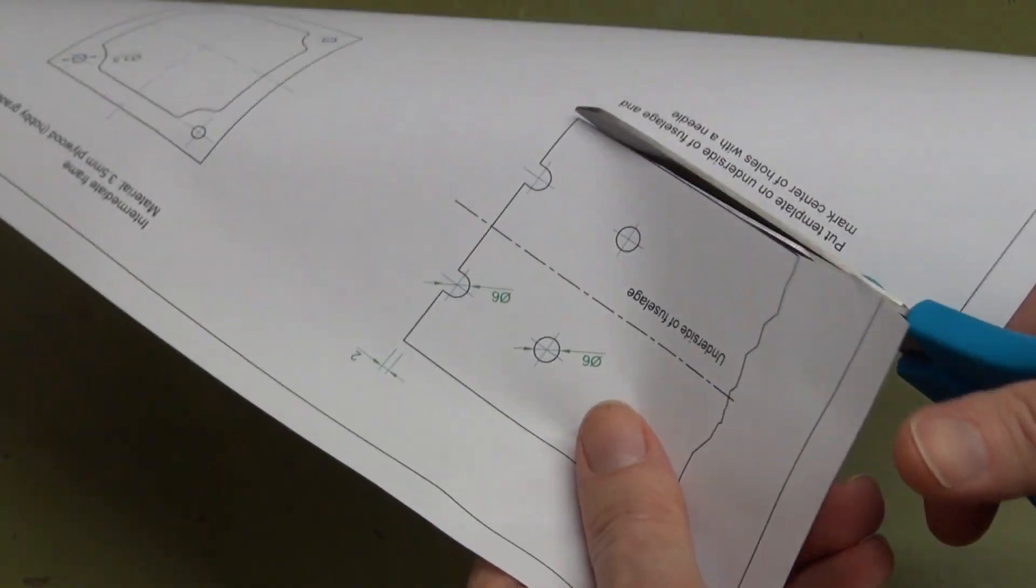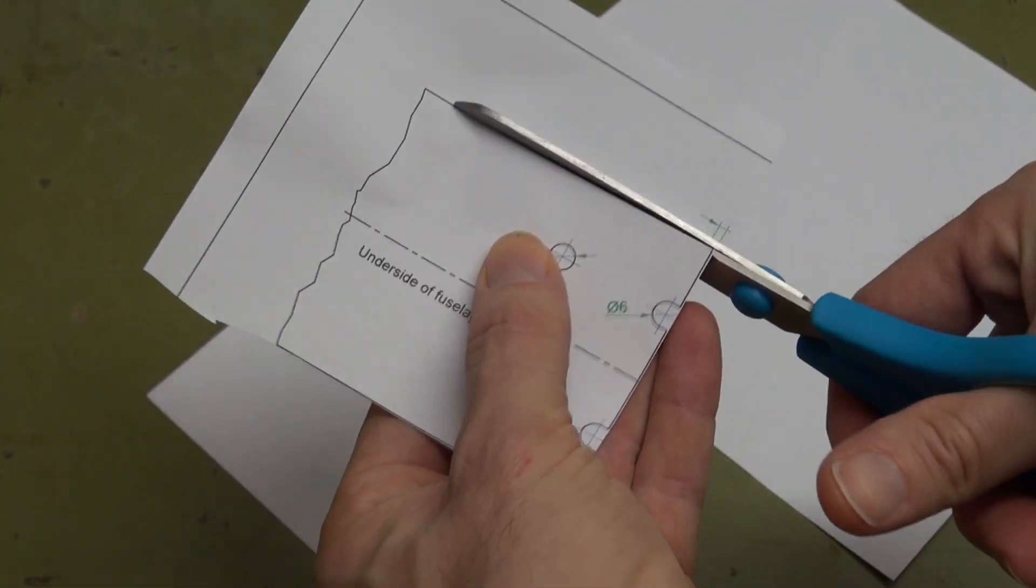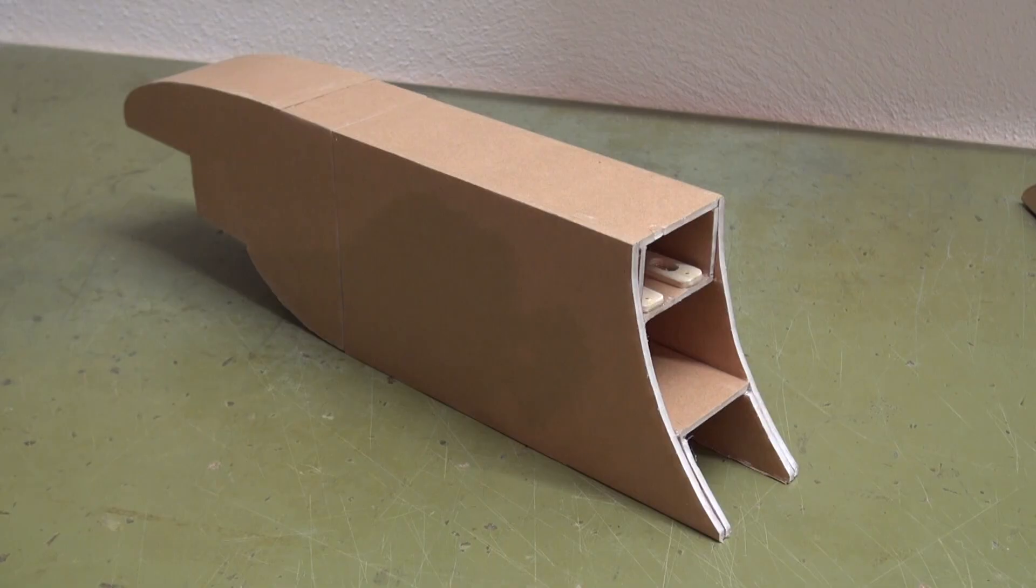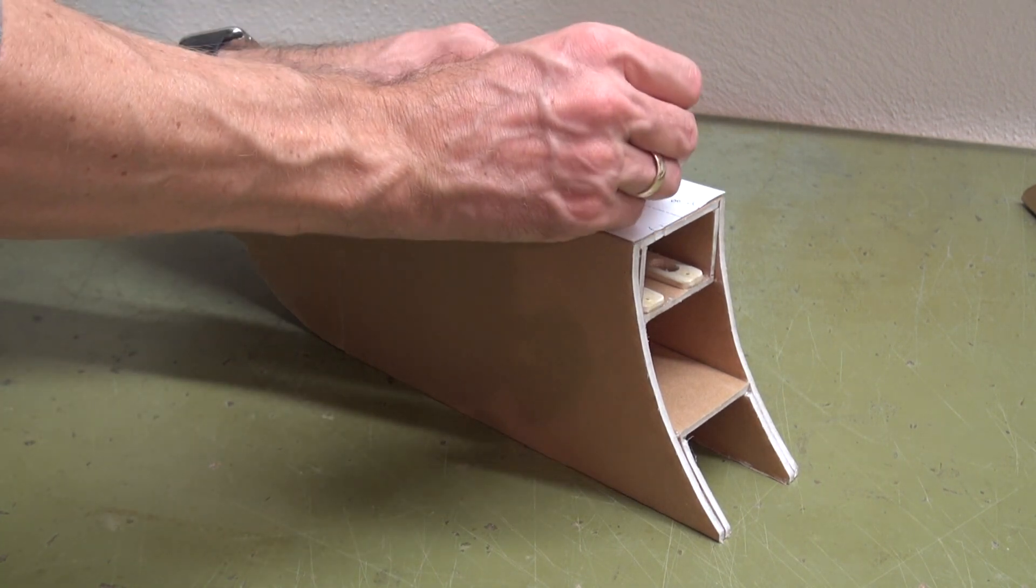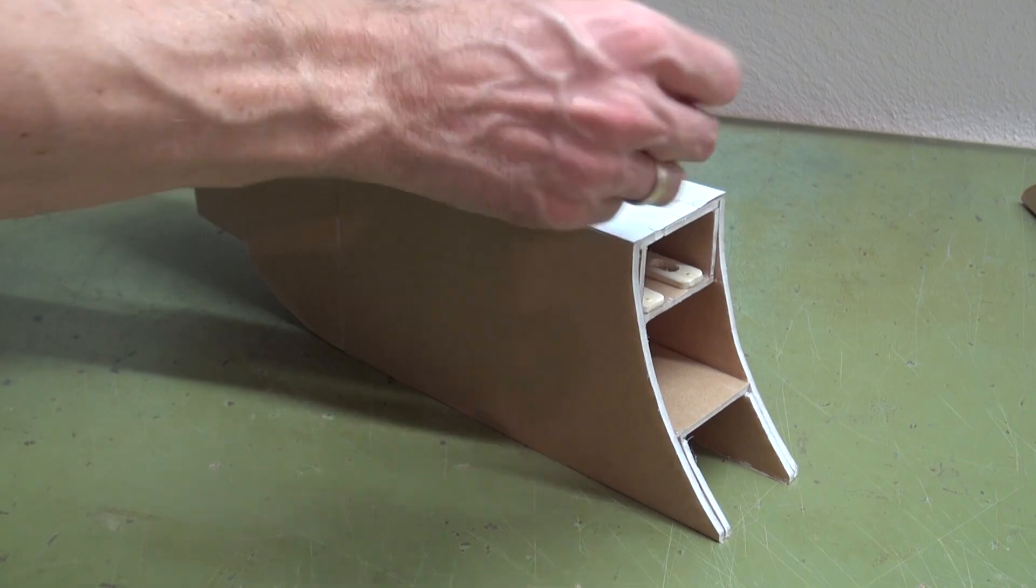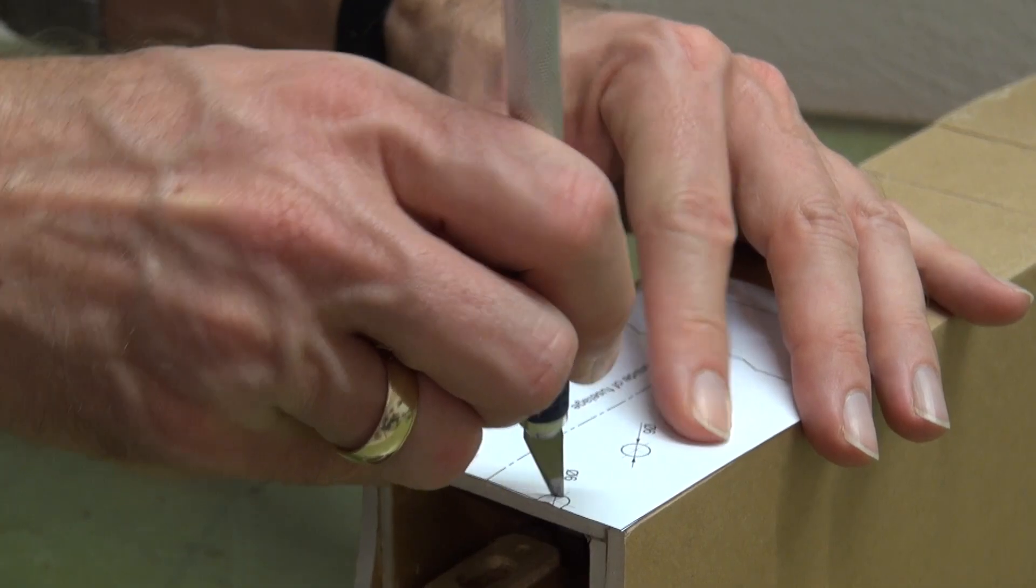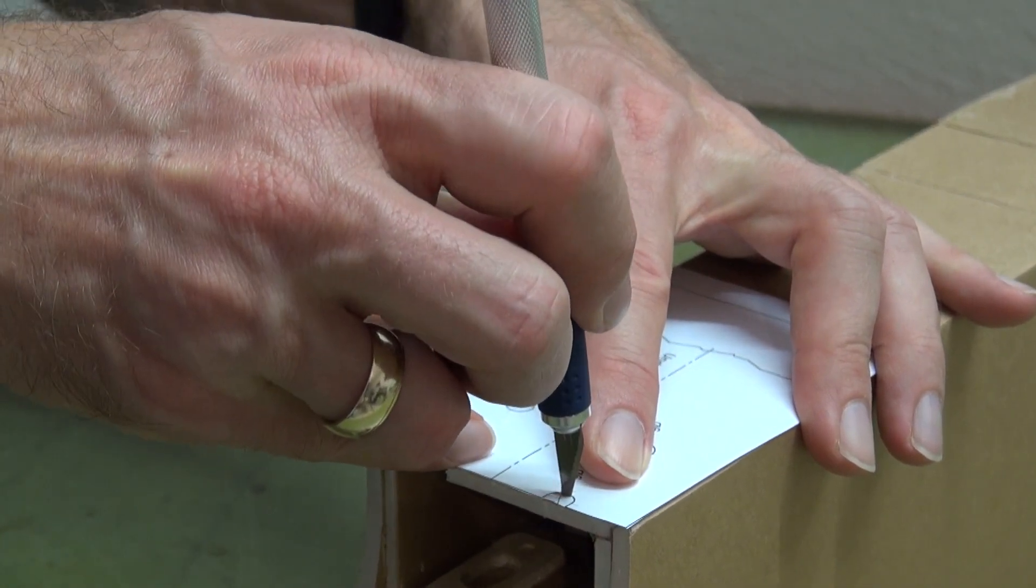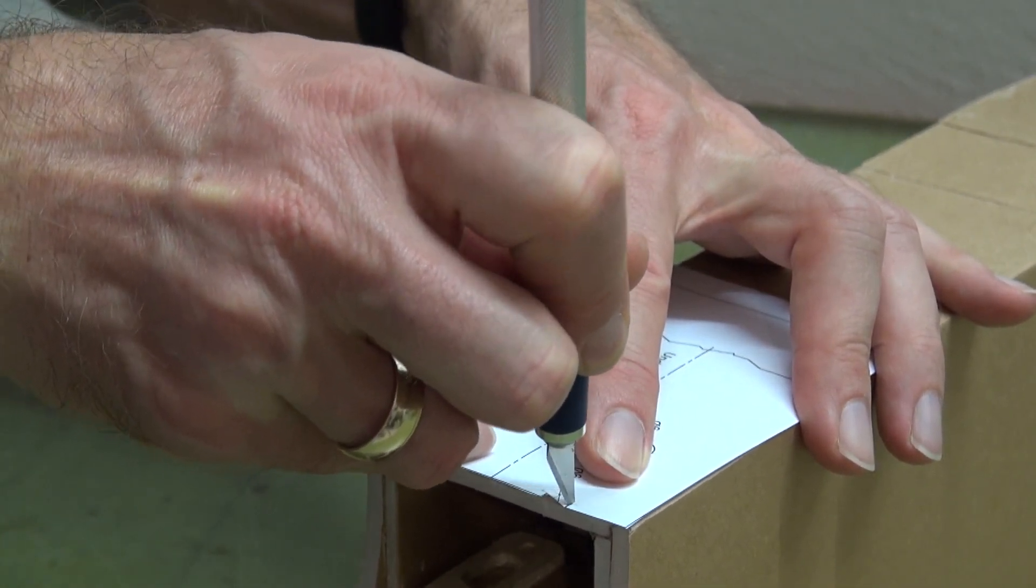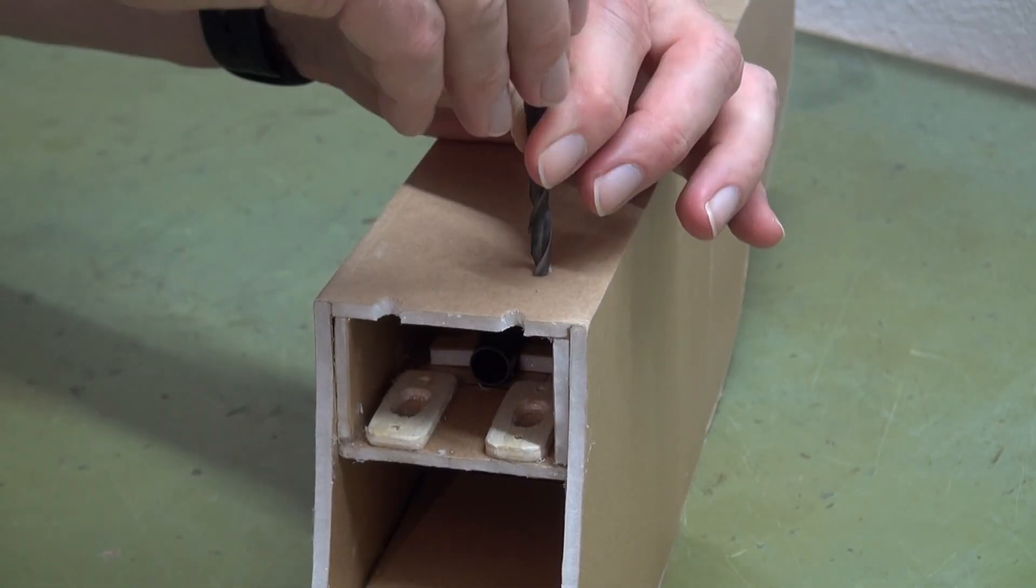Now we need the template for the cutouts in the fuselage. The cutouts are needed to access the screws with a screwdriver. Adjust the template at the fuselage rear edge and mark the center of the two holes in the front with a pin. Cut the half circles on the rear edge with a knife using the template. Drill the forward two holes with a 6 mm drill.